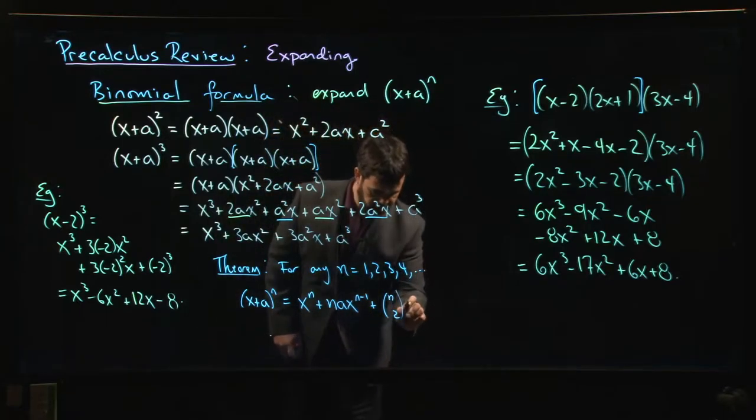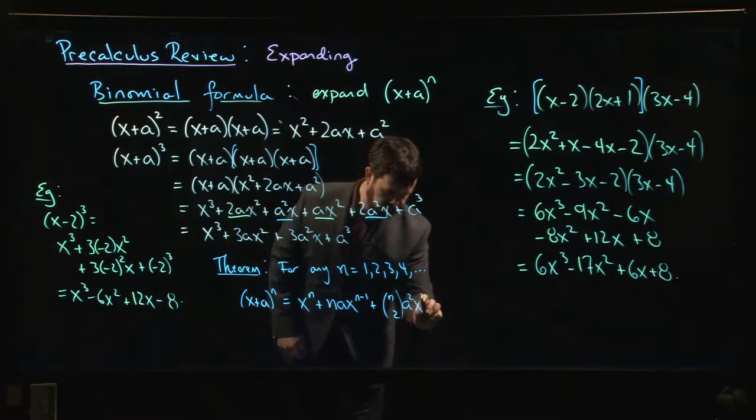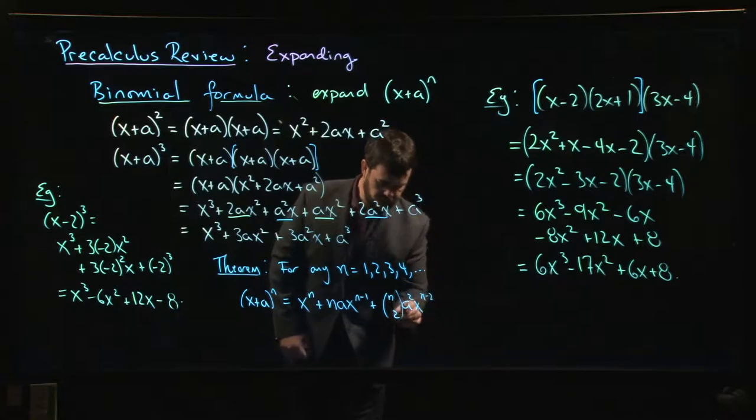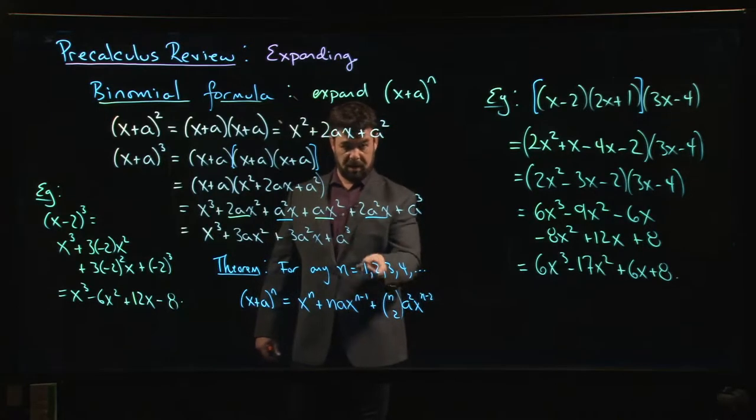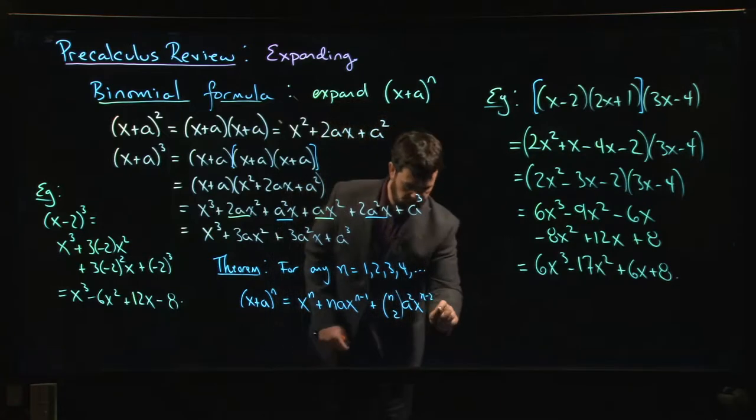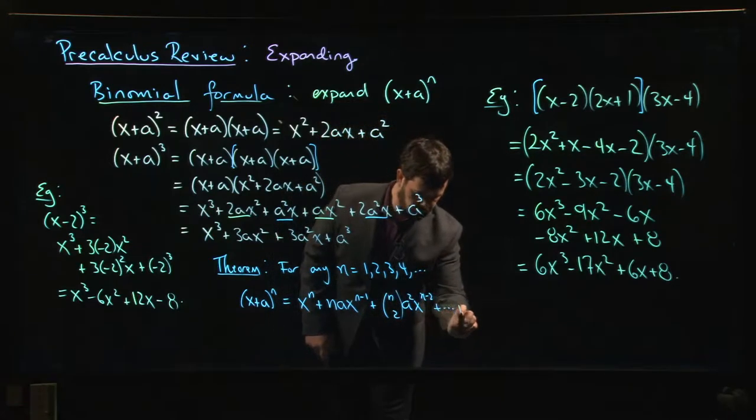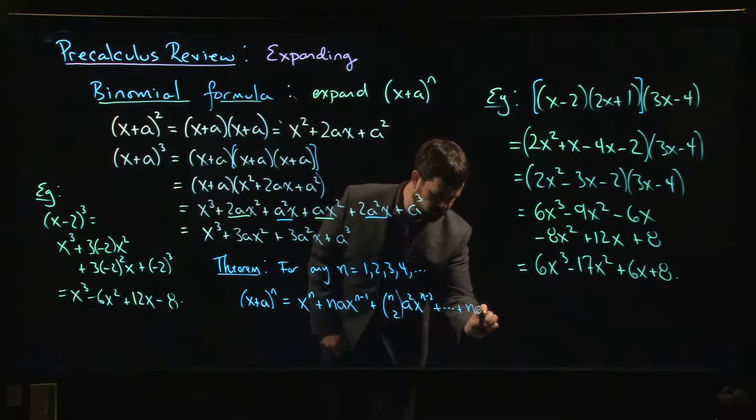Plus (n choose 2)—these are binomial coefficients, I'll remind you about those in a second if you've forgotten—times a² times x^(n-2). At each step, the power for x goes down by 1, the power for a goes up by 1, and so on down to the last term, which is n times a^(n-1) times x, and then a^n.